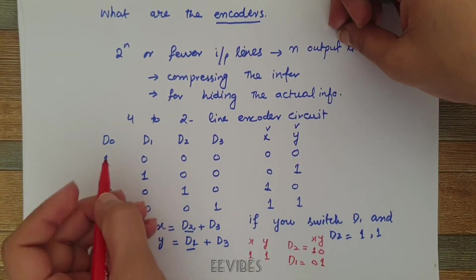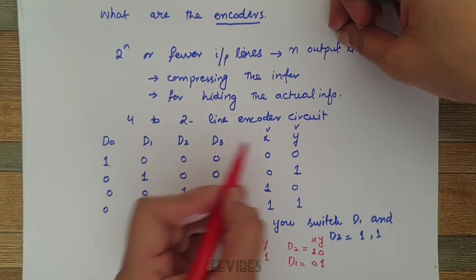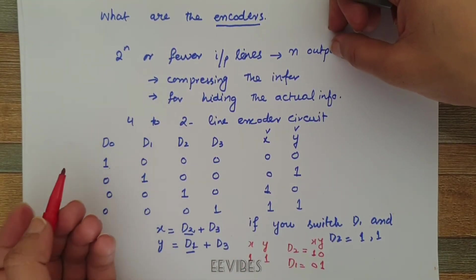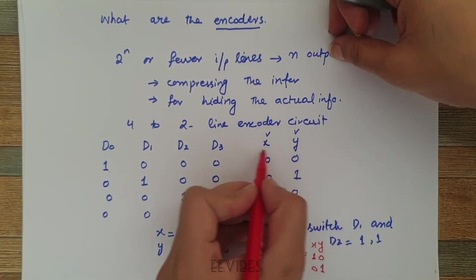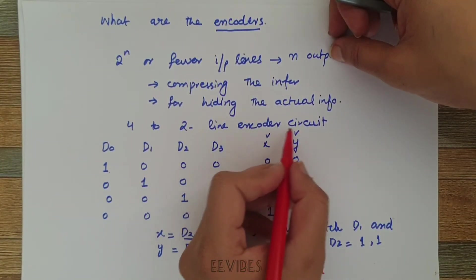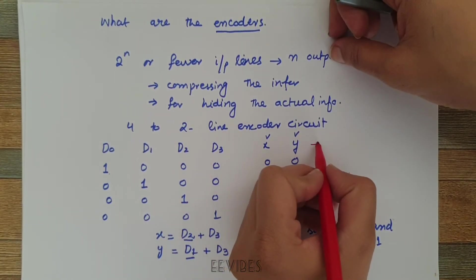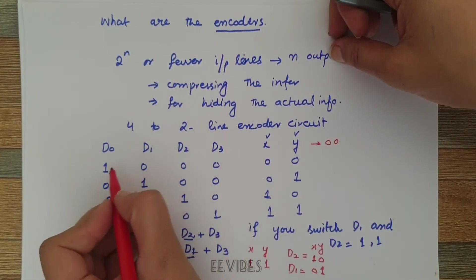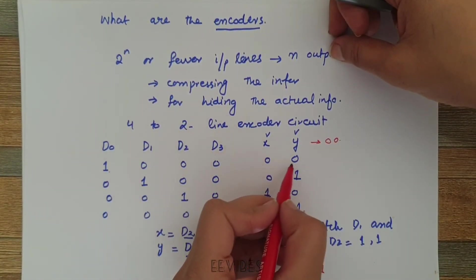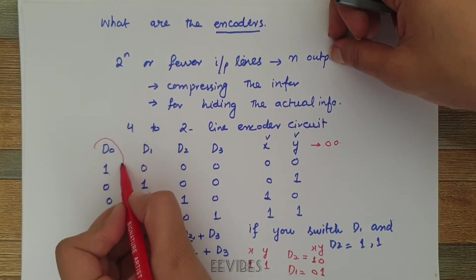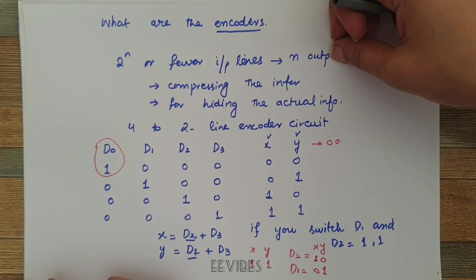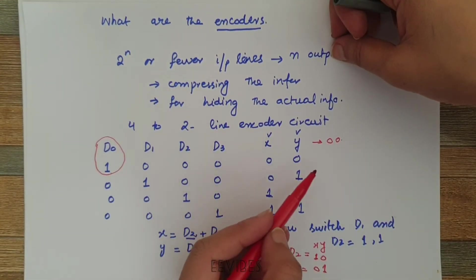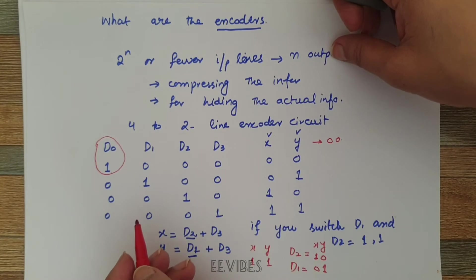The second problem is arising when we have not turned on the encoder circuitry. Then we will be getting at the output side 0, 0, which is actually the output corresponding to D0 equal to 1. So these are the two problems associated with this simple encoder circuitry.